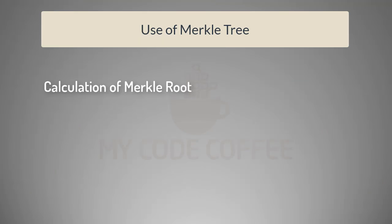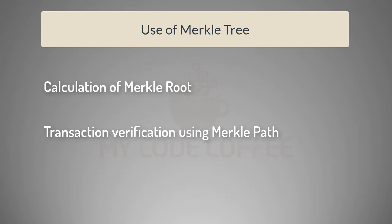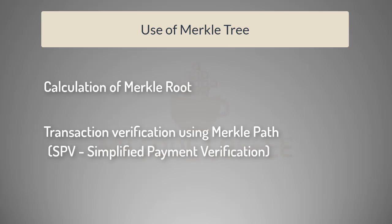So if you think about the uses of Merkle tree: number one, it is used to calculate the Merkle root, and the Merkle root is part of the header of the block. Remember that the Merkle tree is not stored anywhere in the blockchain system — it is only the Merkle root which is stored in the header of the block. The second use is to verify if a transaction belongs to a particular block or not, and that is done by using the Merkle path.